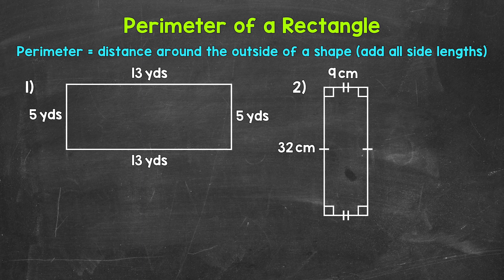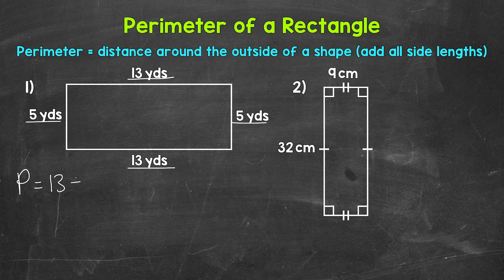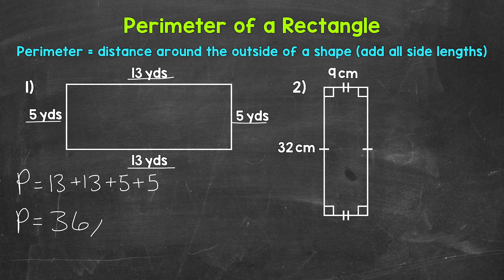Let's jump into our examples, starting with number 1. Let's find the perimeter of this rectangle. We can do this by adding the lengths of all of the sides. So perimeter equals — we have 13 yards on these two sides, and then 5 yards on these two sides. So we have 13 plus 13 plus 5 plus 5. 13 plus 13 is 26, plus 5 is 31, plus 5 is 36. So the perimeter is 36 yards — that's the distance around that rectangle.